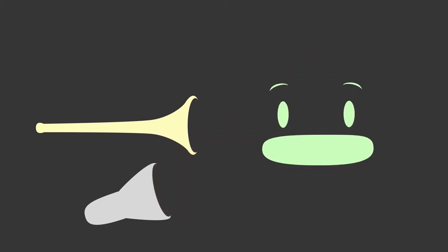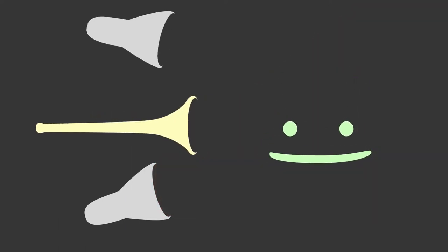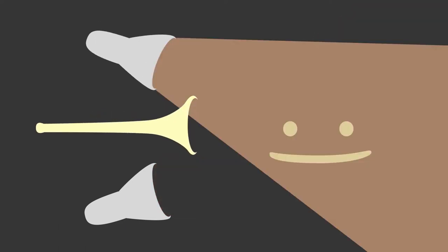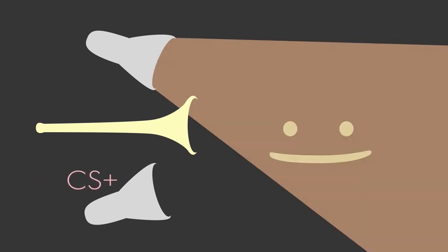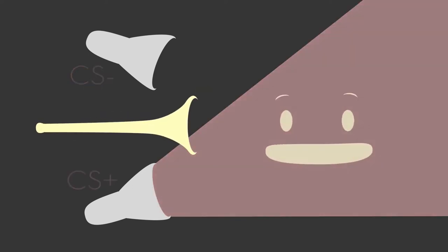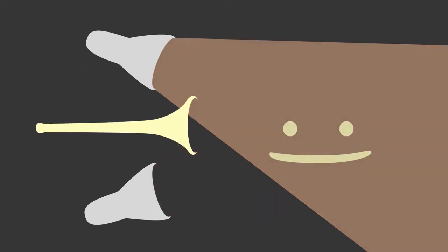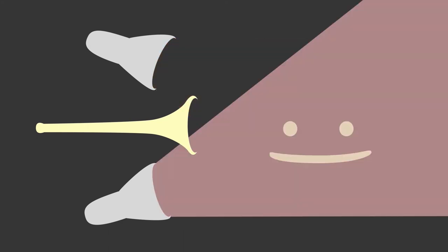Once this CR is established, we intersperse trials pairing the red light and horn with other trials in which a new stimulus — say an orange light — is presented with no US, no boat horn. Initially you're likely to generalize by tensing up in response to both the red light (the CS+) and the orange light (the CS−). As training continues, you'll learn to discriminate and will tense up only when you see the red light.